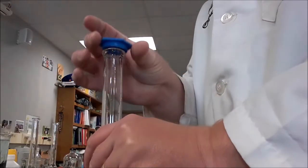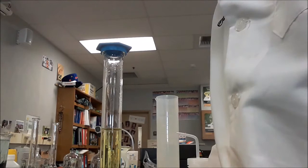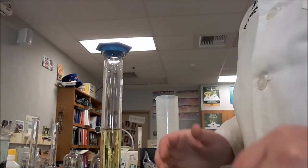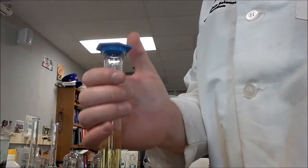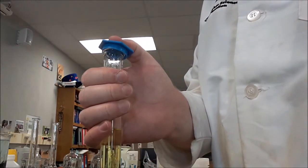The next trick is how to get the cap onto the volumetric flask. The way to do it, and there's a little bit of a trick to it, you wrap your fingers around the neck, and you use your thumb to put the cap on.